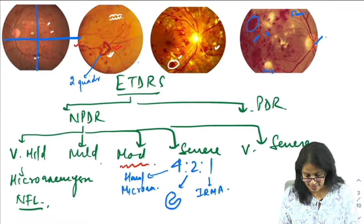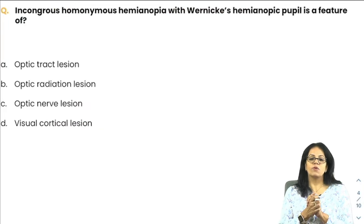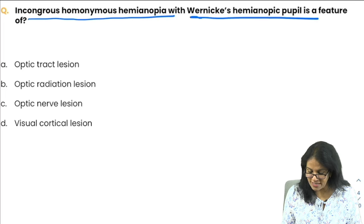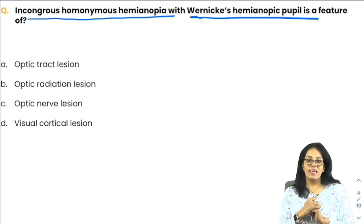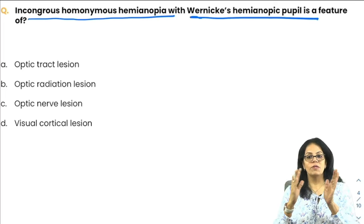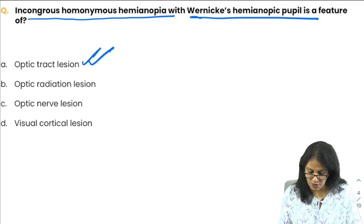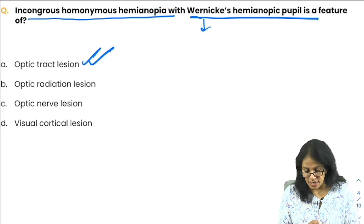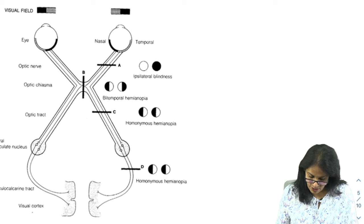Now let's look at visual pathway lesions. Incongruous homonymous hemianopia with a burning hemianopic pupil — you should be thorough with lesions of the visual pathway. Incongruous homonymous hemianopia typically points to an optic tract lesion.